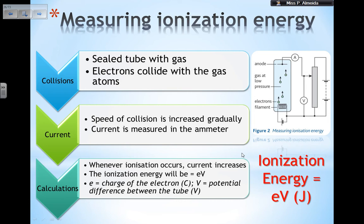When ionization occurs, the current increases because there is an additional electron — current is the number of charges passing in a certain amount of time. The ionization energy, which is the energy needed to remove an electron from an atom, equals eV, where e is the charge of the electron (1.6 × 10⁻¹⁹ coulombs) and V is the potential difference in volts. This gives the energy in joules, since coulombs × volts = joules.